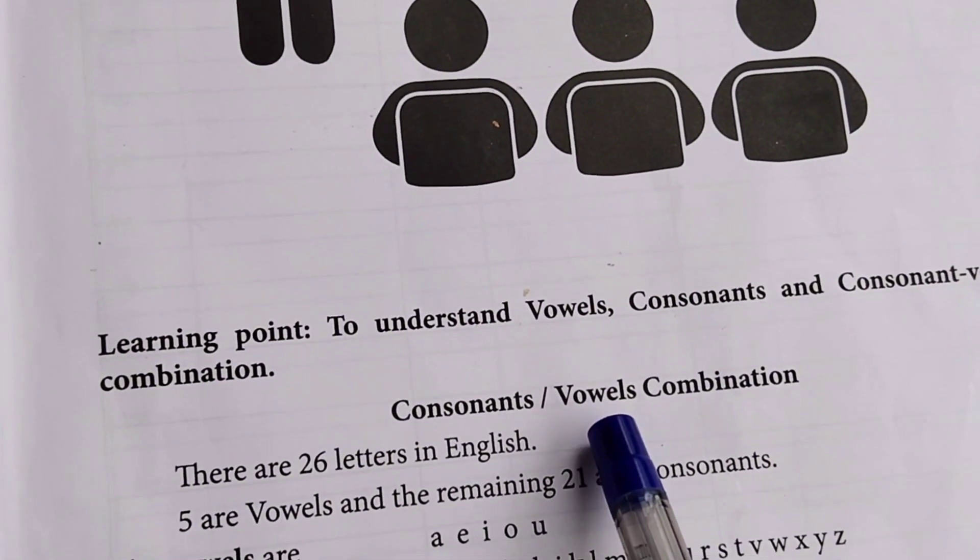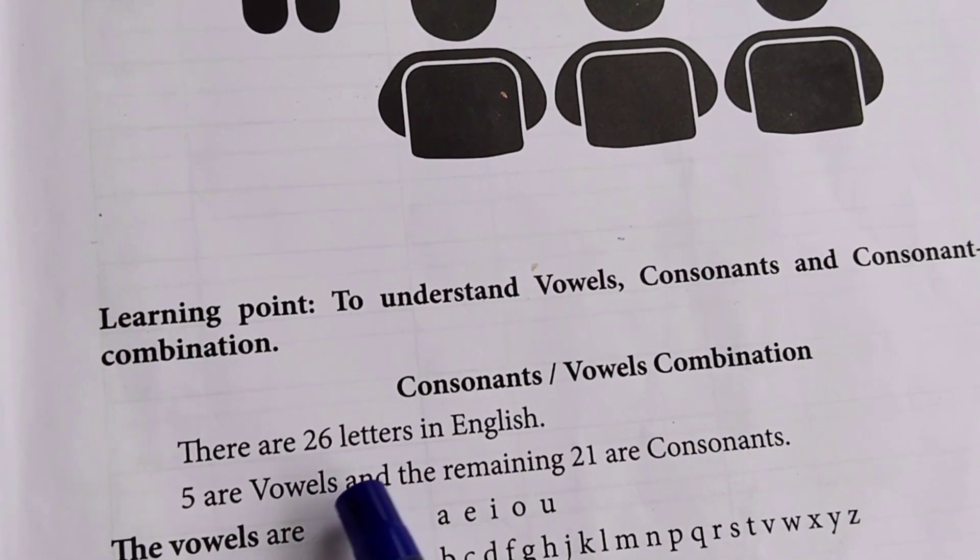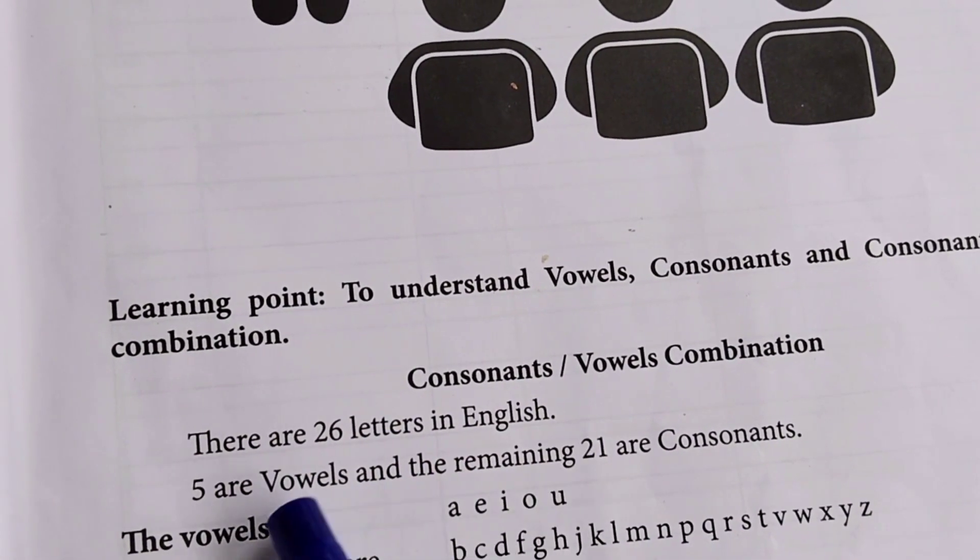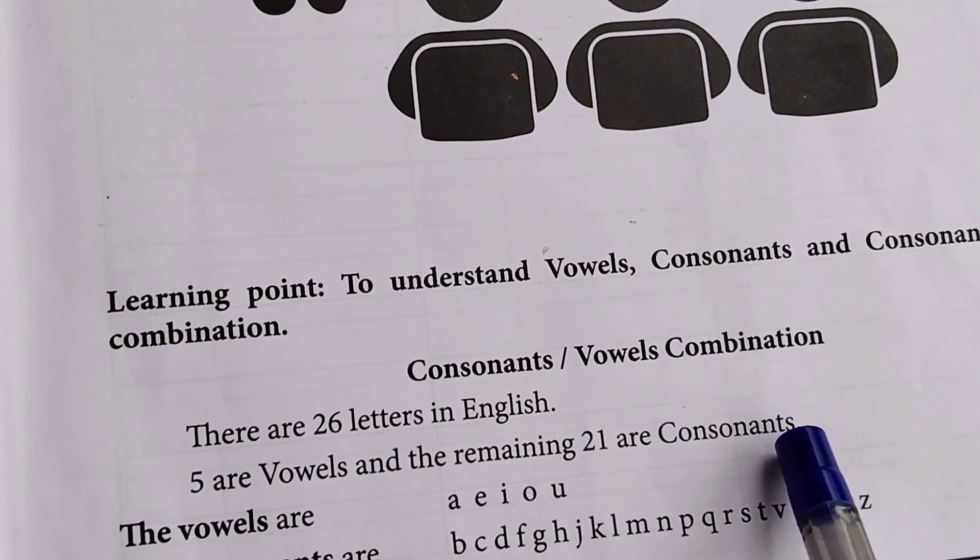Consonant vowel combination. There are 26 letters in English. Five are vowels and the remaining 21 are consonants.